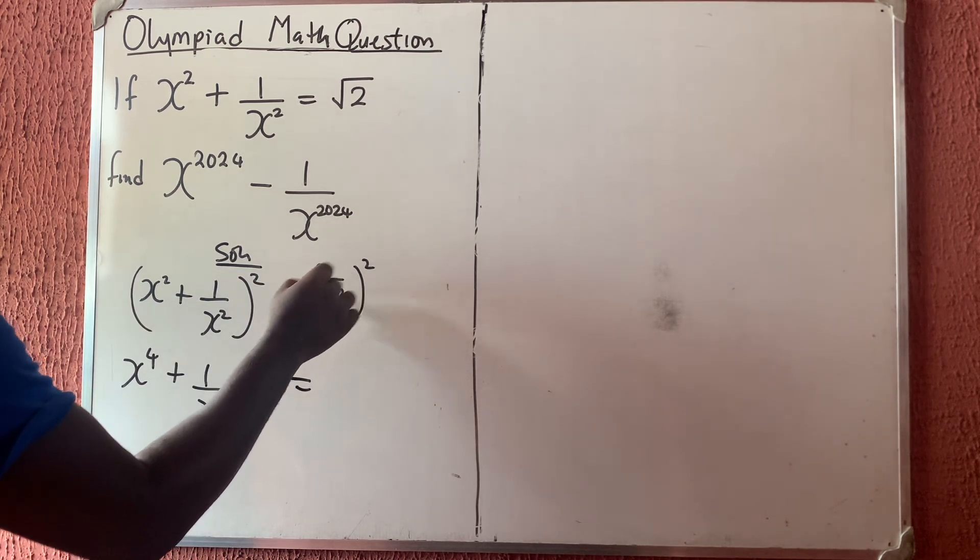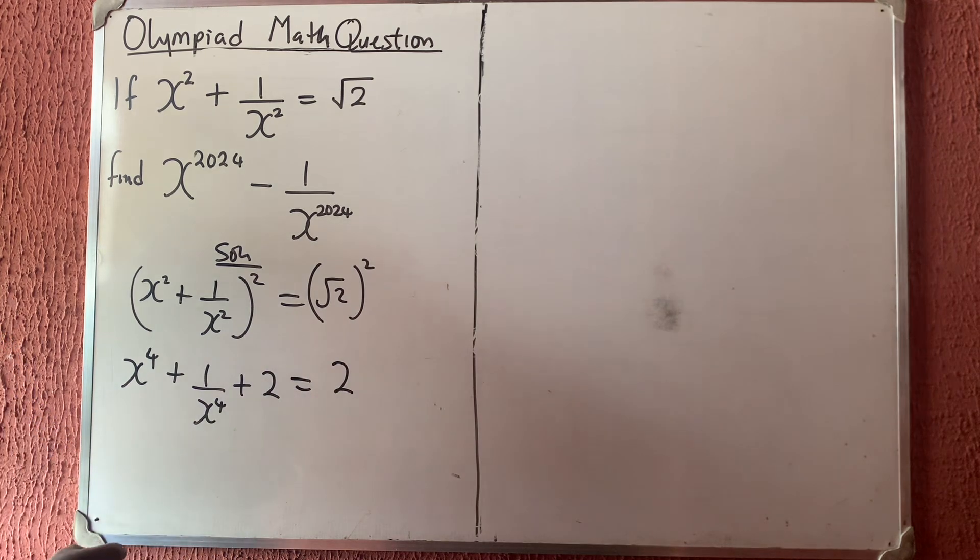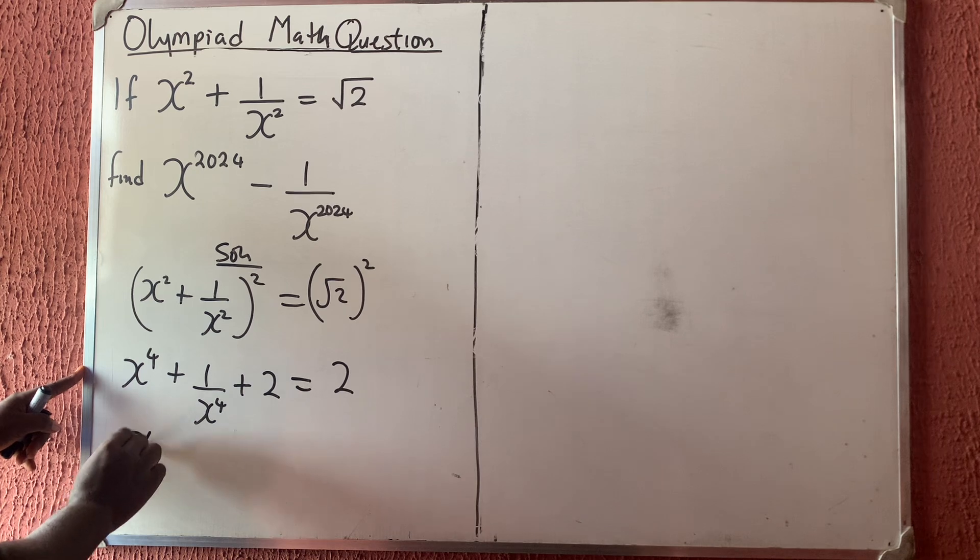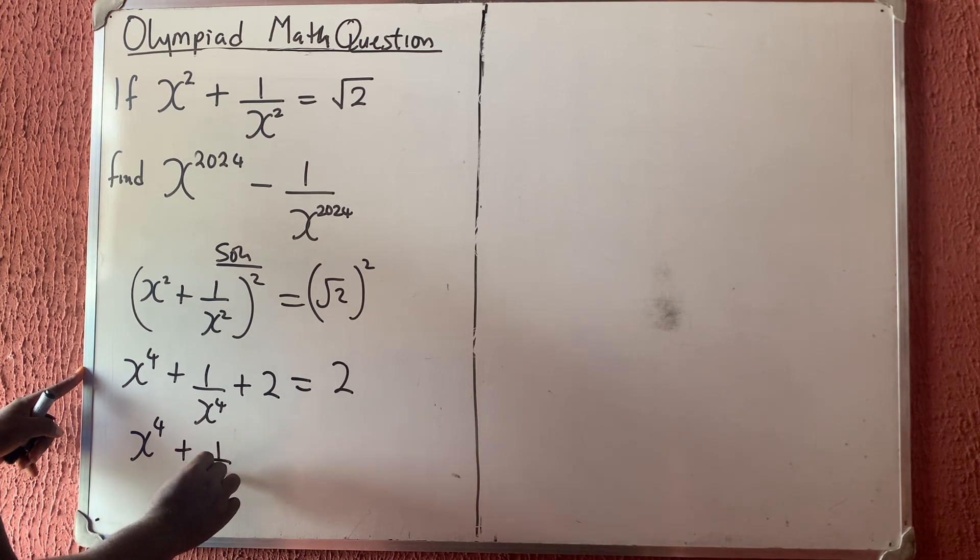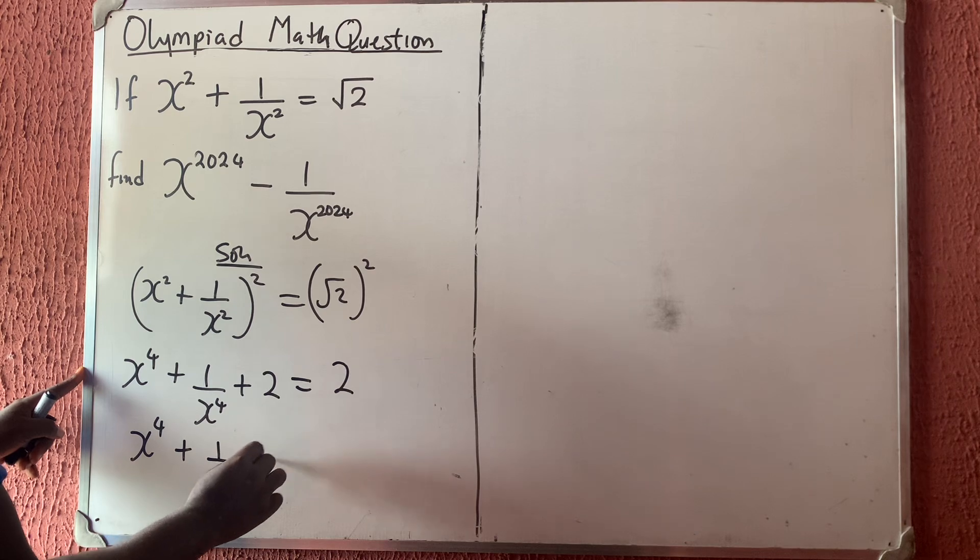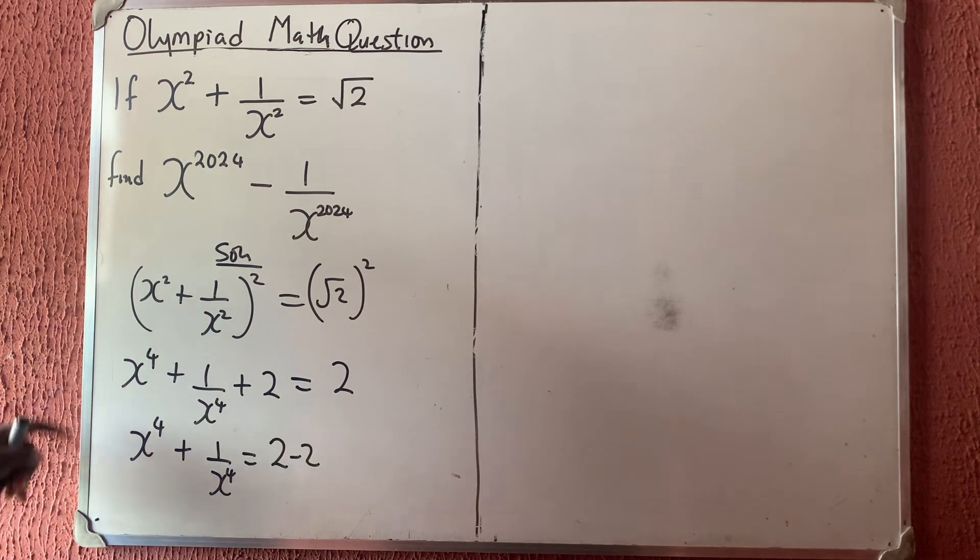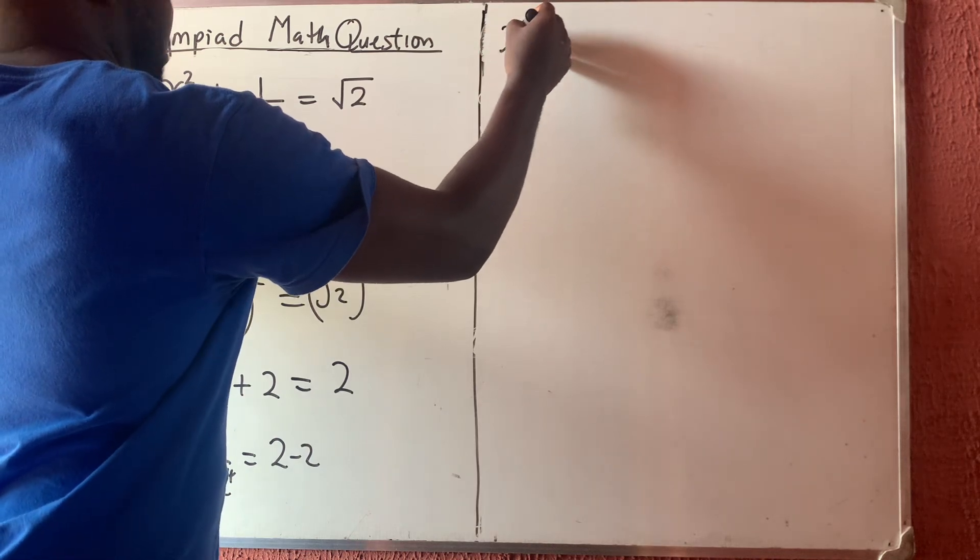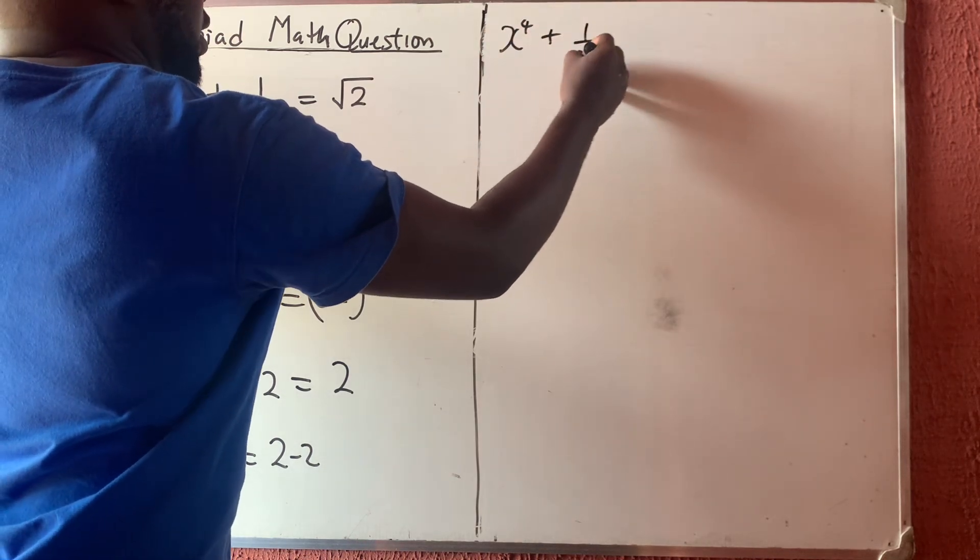Is equal to what? Take the square root, I'm having 2. So now, let this go to this side, I'm going to have that x to the 4 plus 1 over x to the 4 is equal to what? 2 minus 2. So this is going to give me x to the power 4 plus 1 over x to the power 4 is equal to what? 2 minus 2 is 0.